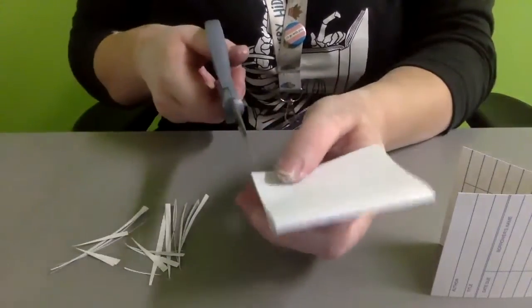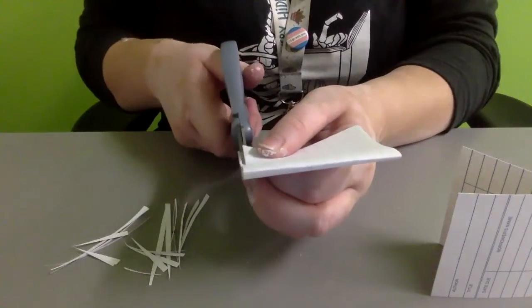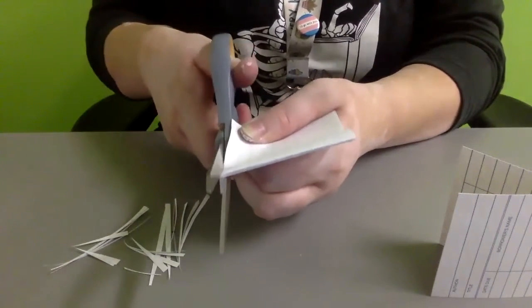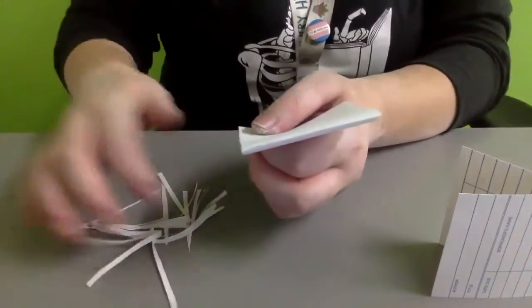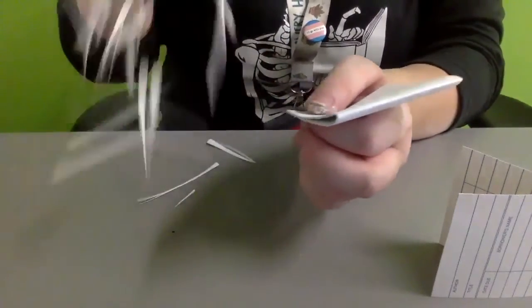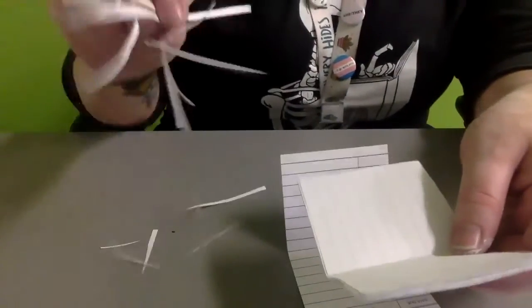I'm also going to go ahead and take off this little bit here just to give it a nice even bottom. There we go. Now we have confetti. All right, so once you've cut that all to size and you have done your confetti.